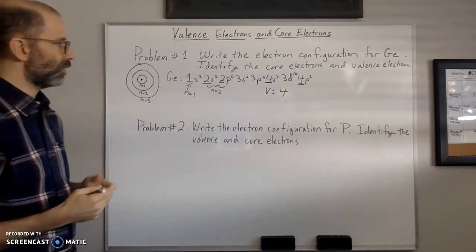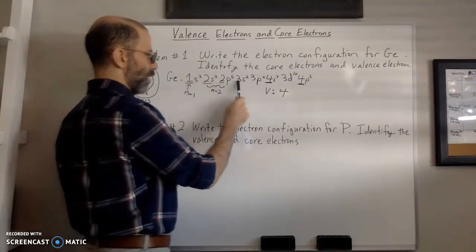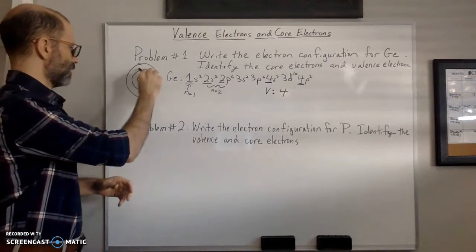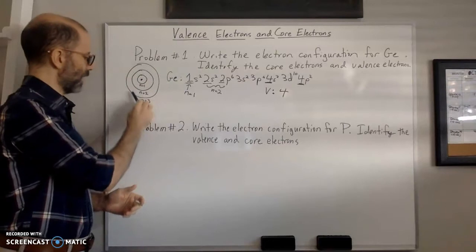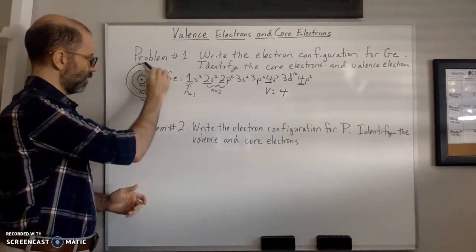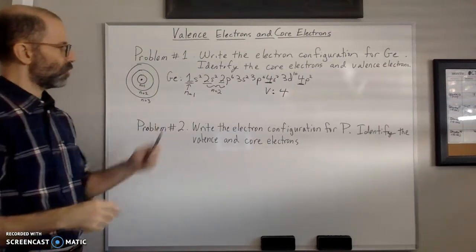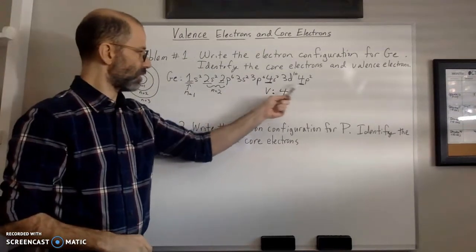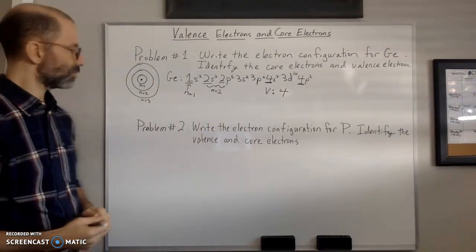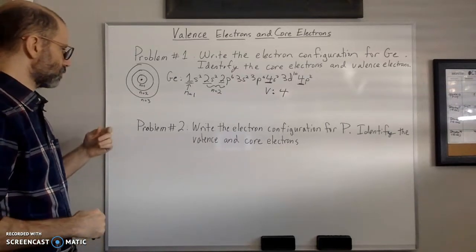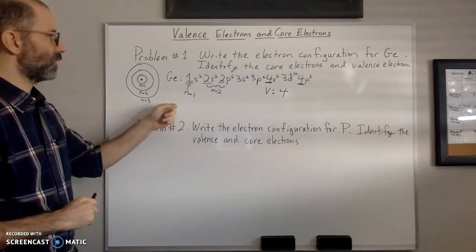The rest of the electrons — the ones at lower energy levels — are called core electrons. Anything inside the highest energy level is considered core. The valence electrons are those at the outermost shell; everyone else is considered core.